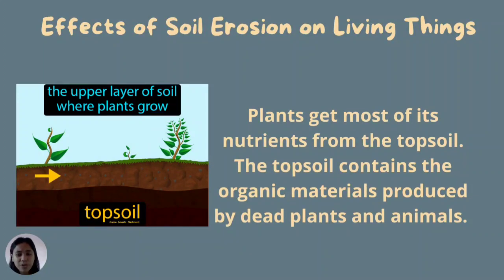Plants get most of their nutrients from the topsoil. The topsoil contains organic materials produced by dead plants and animals. However, this topsoil is usually carried away by wind and water. Once the topsoil is gone, the nutrients for plants will be carried away as well. Too much soil erosion makes the soil unable to hold or absorb water, making it dry, coarse, and eventually unfit for vegetation.